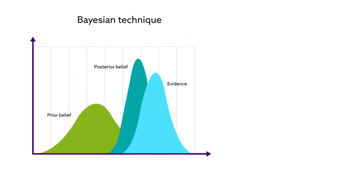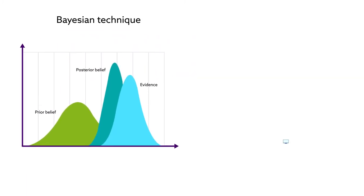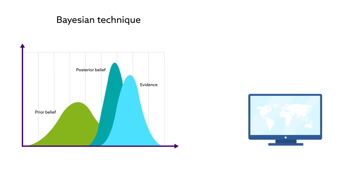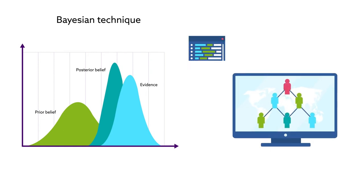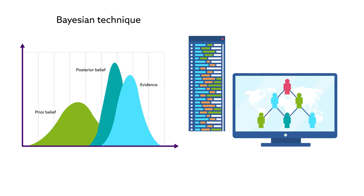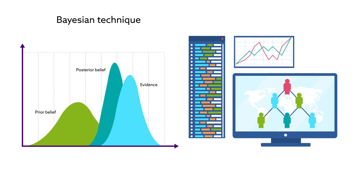Statistical models, of course, are only as good as the data on which they're based. To ensure migration models reflect the reality of migrant journeys, the authors detail examples of data sources that can inform models of asylum migration.